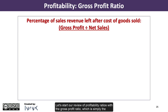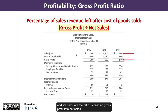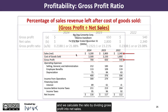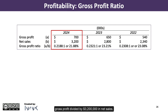Let's start our review of profitability ratios with the gross profit ratio, which is simply the percentage of sales revenue left after cost of goods sold. We calculate the ratio by dividing gross profit into net sales. Big Dog's gross profit ratio for 2024 was 21.88%, calculated as $700,000 in gross profit divided by $3,200,000 in net sales.